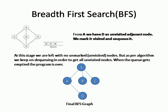At this stage we are left with no unmarked or unvisited nodes. As per the algorithm we keep dequeuing until all unvisited nodes are found. When the queue gets emptied the process is complete, and the final BFS traversal result is shown in the figure. From starting vertex s, three nodes a, b, and c were visited, then one adjacent node of a — vertex d — was also visited. All nodes and vertices are visited exactly once.